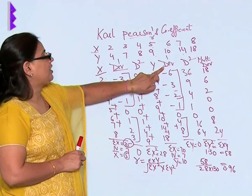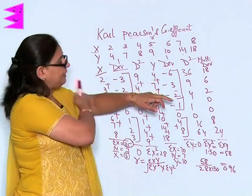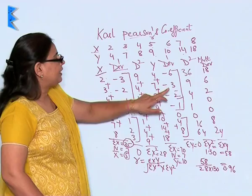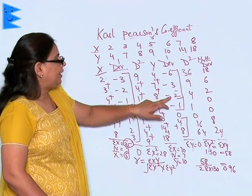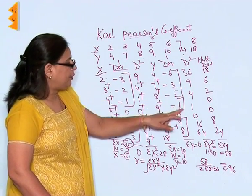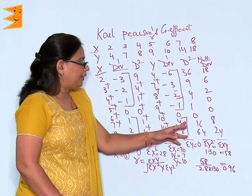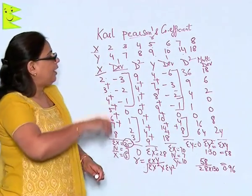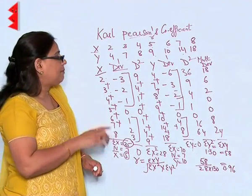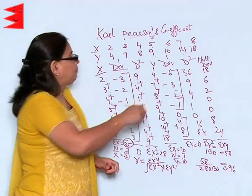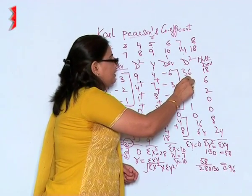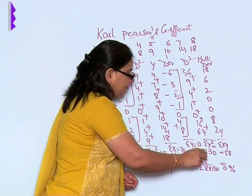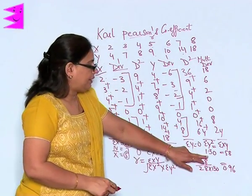When I draw the deviation squared, I forget the positive and negative signs: 6 squared is 36, 3 squared is 9, 2 squared is 4, 1 squared is 1, 0 is 0, 4 squared is 16, and 8 squared is 64. Adding: 36 plus 9 plus 4 plus 1 plus 0 plus 16 plus 64 gives me sigma Y squared equal to 130.